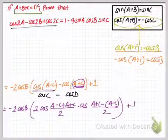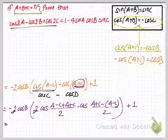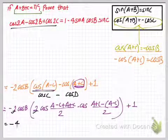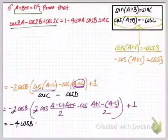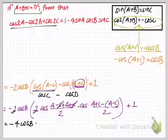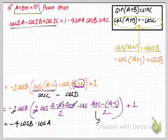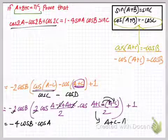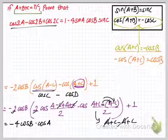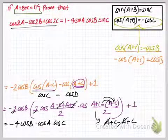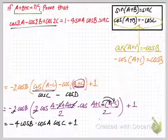Multiplying the two 2's together I have 2 times 2 is 4 cos B. Getting rid of positive C and negative C gives cos(A plus A) which is 2A divided by 2, which is simply cos A. Then distributing the negative sign gives minus A plus B, so I have cos((C plus C)/2) which is simply cos C. Finally I have plus 1.